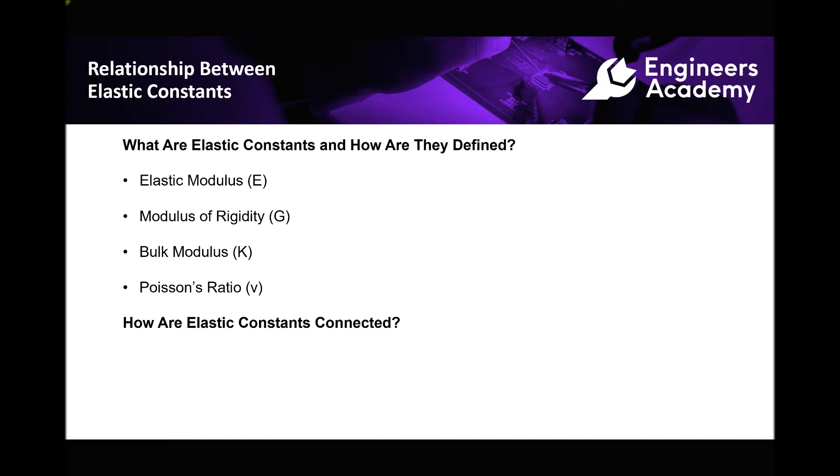There are a number of elastic constants and some of these you may already be familiar with. We have the elastic modulus, which is represented by the letter E, and that's also commonly referred to as Young's modulus. We have the modulus of rigidity, G. We have something called the bulk modulus, K, and we also have something called the Poisson's ratio, which is represented by the Greek letter nu. So let's take each of those in turn and begin to get a better understanding of what each of those constants represent.